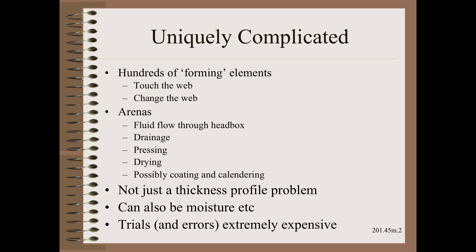One example is moisture variation that may or may not stem from a basis weight or caliper variation. Finally, trials and errors on paper machines are extremely expensive — something like $20,000 per hour on a wide modern machine.